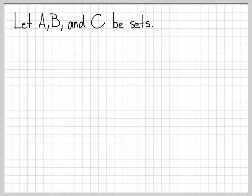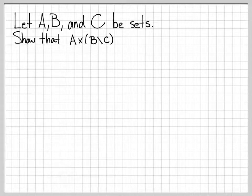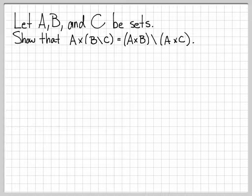This is another problem that involves the Cartesian product. We're going to work with the sets A, B, and C. What we're going to do is show that the Cartesian product of A with B difference C is equal to the Cartesian product of A and B differenced with the Cartesian product of A and C. So we're going to show that these two sets are equal to each other.